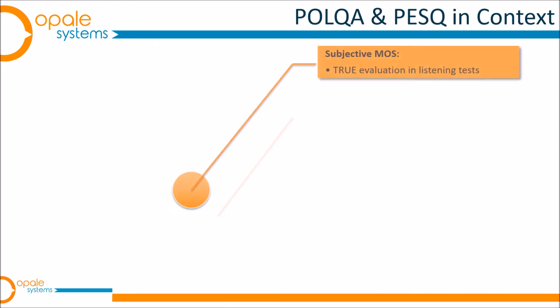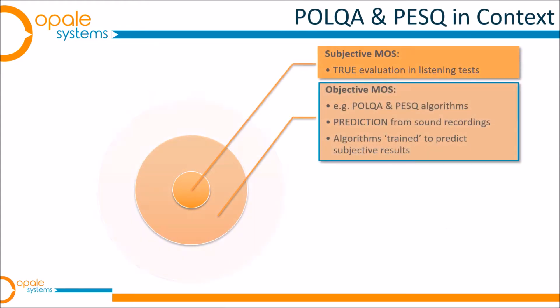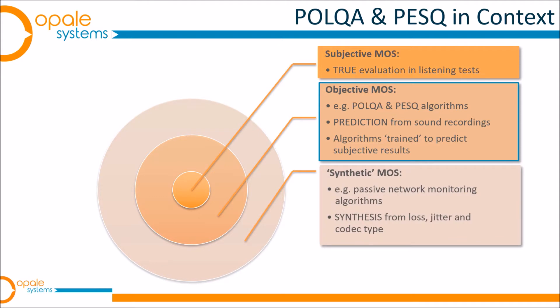Let's put POLQA and PESQ into some context. We start with subjective or true Mean Opinion Score at the centre of this diagram. As mentioned in the first video, subjective listening tests are the actual reference for MOS. Moving out to the next layer we have Objective MOS, and this is where we find POLQA and PESQ and similar algorithms, which make predictions from sound recordings of the outcome of subjective MOS. So they're very closely related to subjective MOS itself.